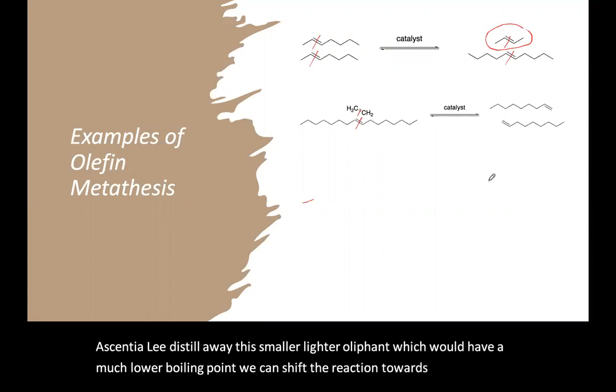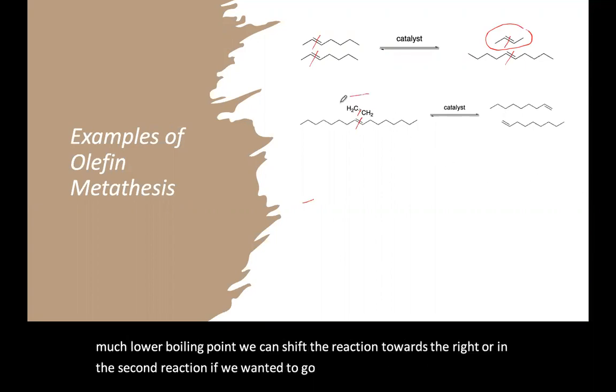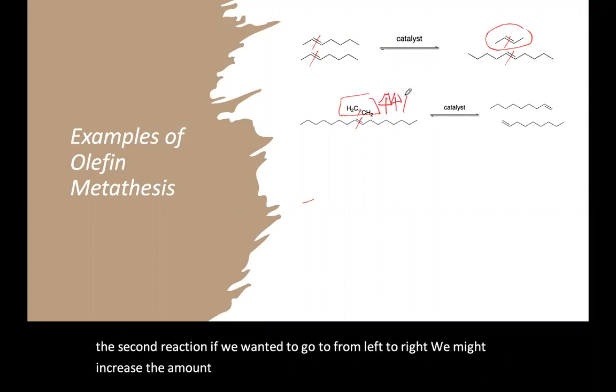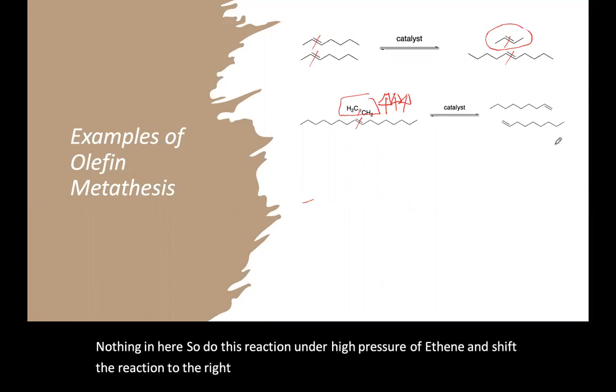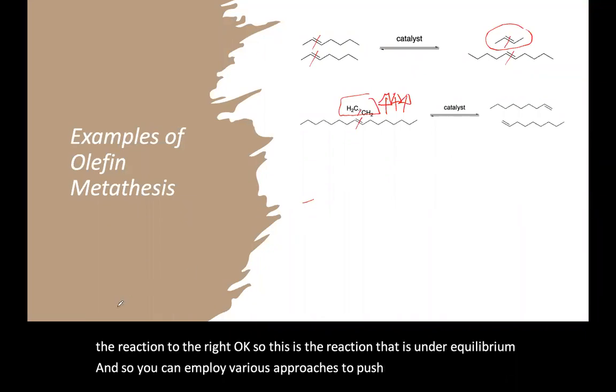Or in the second reaction, if we wanted to go from left to right, we might increase the amount of ethene in here. So do this reaction under high pressure of ethene and shift the reaction to the right. So this is a reaction that is under equilibrium, and so you can employ various approaches to push the equilibrium the direction that you want.